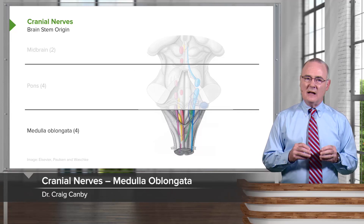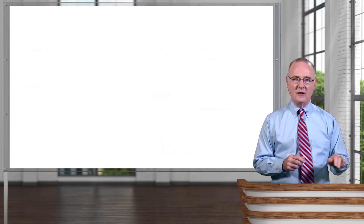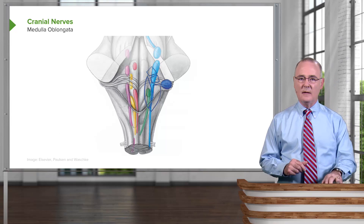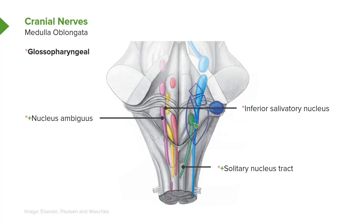This brings us to the medulla oblongata, where four cranial nerve nuclei are housed. The first are the glossopharyngeal cranial nerve nuclei, which include the nucleus ambiguus, the inferior salivatory nucleus, and the solitary nucleus — with the solitary tract and nucleus shown right in through here.